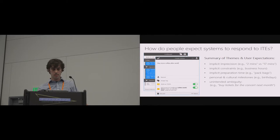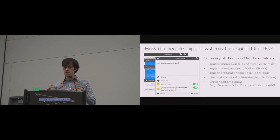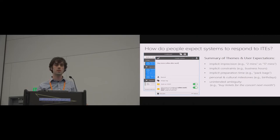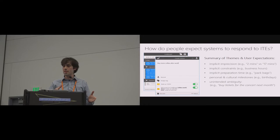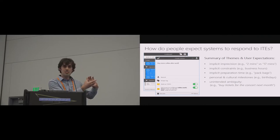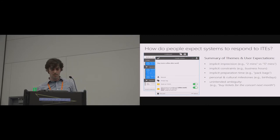The first finding is really interesting: very often the imprecision was implicit. If I say 'I'll stop by your office in two minutes,' you're probably less sure of when I'll arrive than if I said 'in 17 minutes.' The sentence structure looked identical, but there was implicit uncertainty being communicated in some cases but not others.